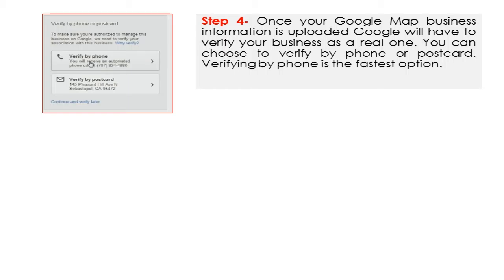Then you'll have to verify that your business is a legitimate business, and this can be done by phone or by postcard. Verifying by phone is the fastest option. When you verify by phone, they send you a text or call you with a recorded message that gives you a special PIN number. When you verify by postcard, they will send you a postcard — sometimes in an envelope, sometimes as a postcard — and that can take up to a week, maybe 10 days to receive. So phone verification is much quicker; it happens almost instantly, so you have to be ready for that phone call and ready to write down the PIN number. In either case, they're sending you a PIN number that allows you to go back and input it to verify your business.